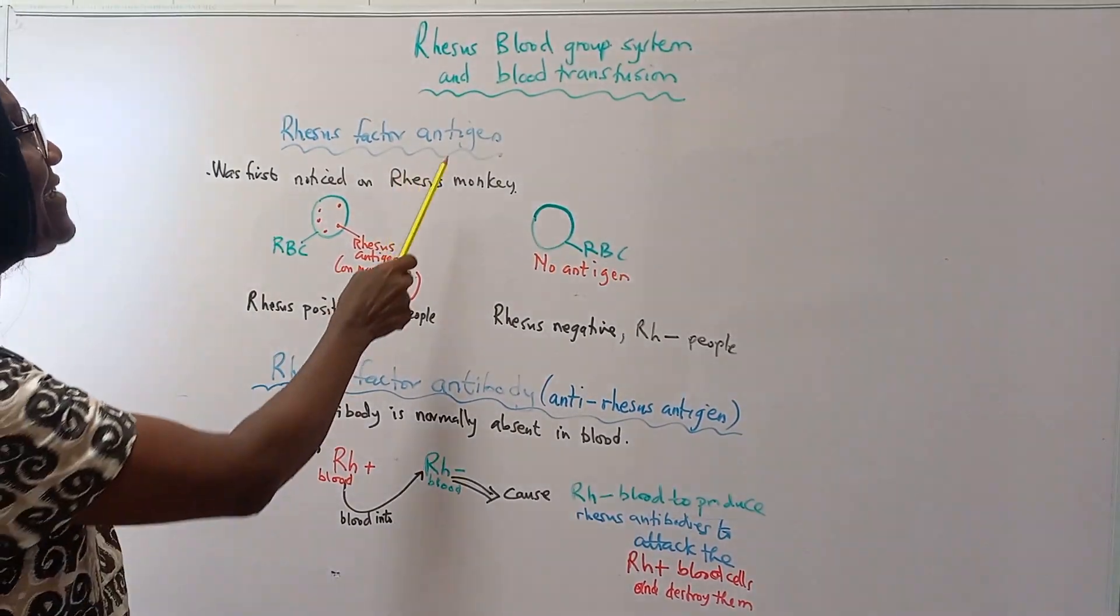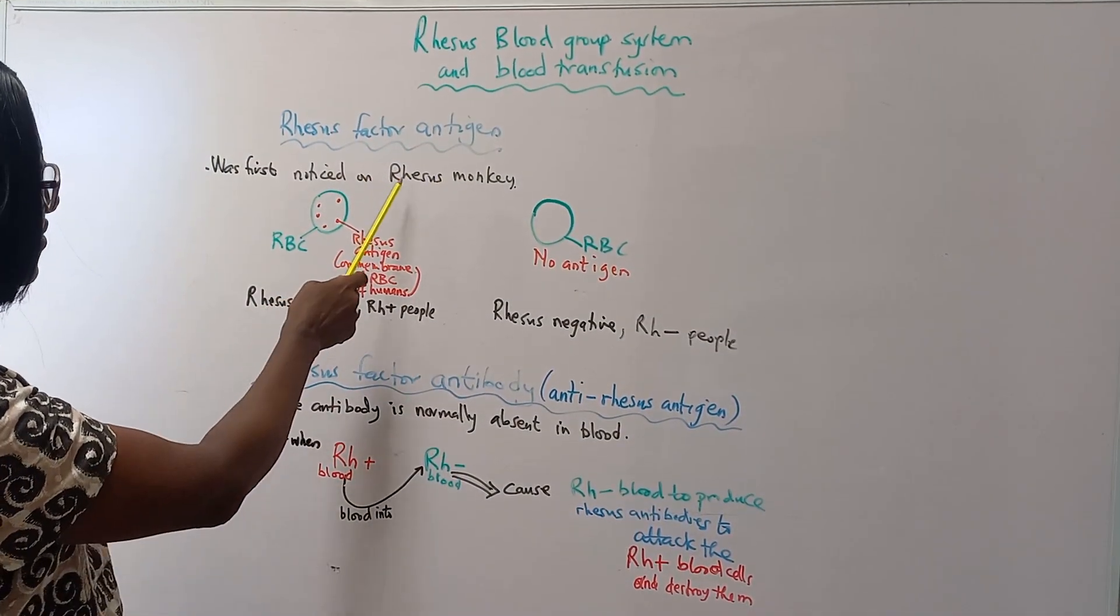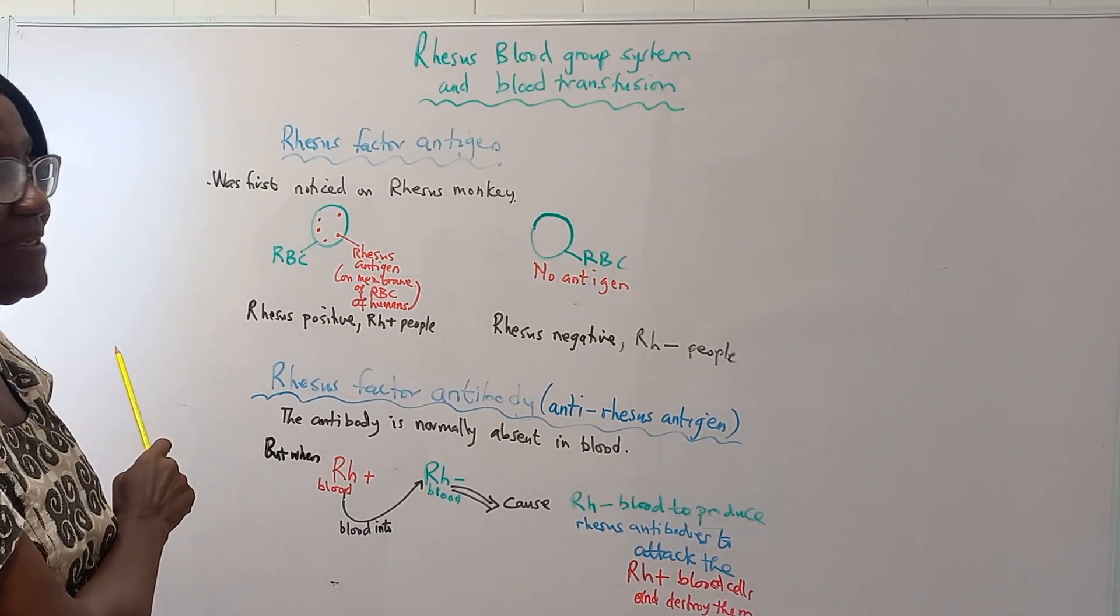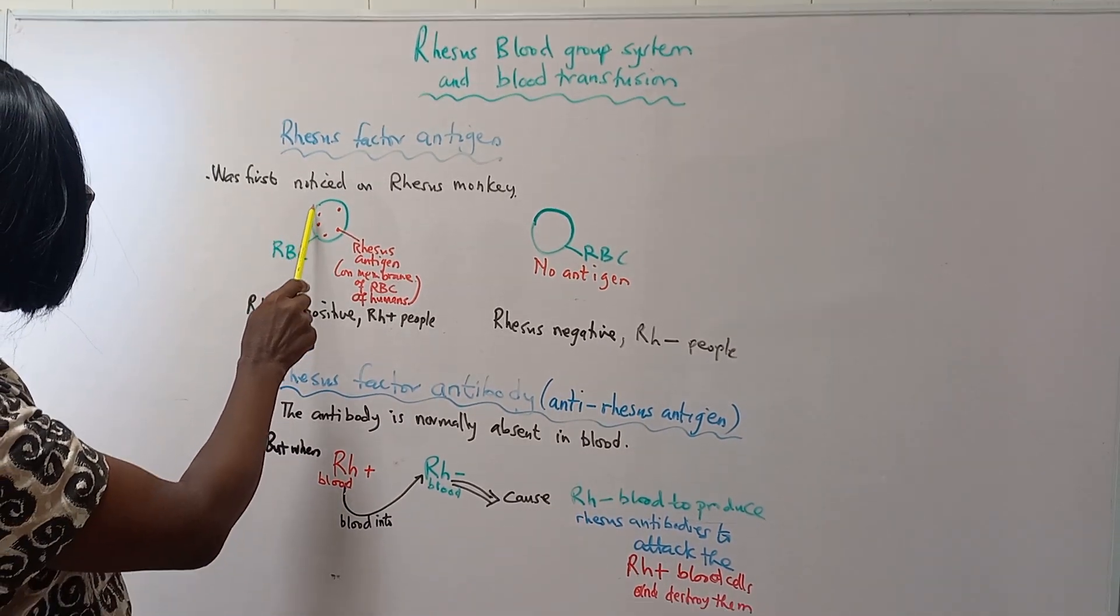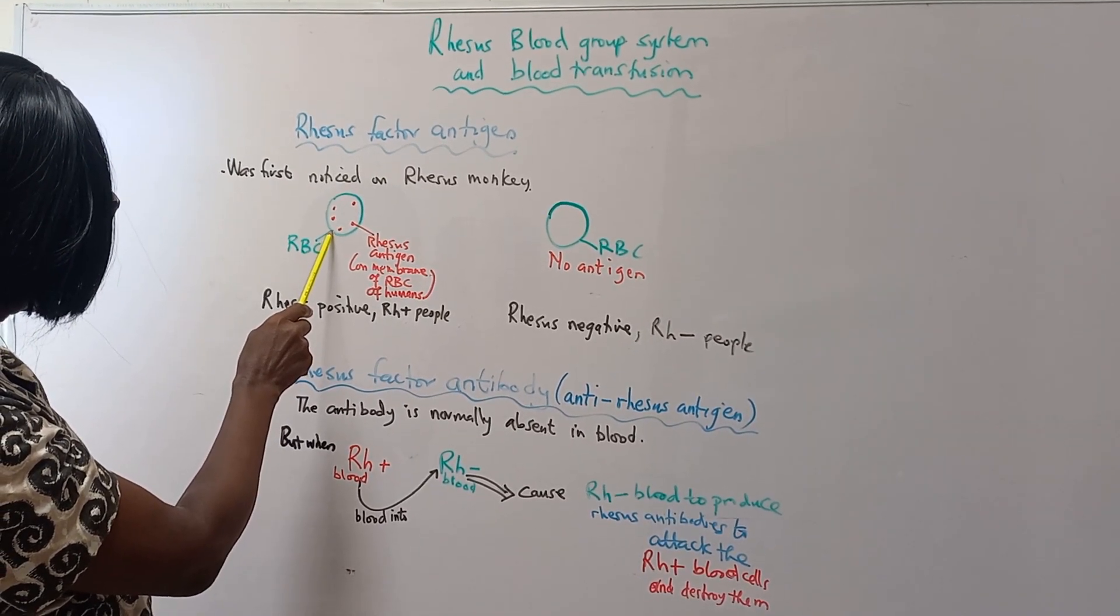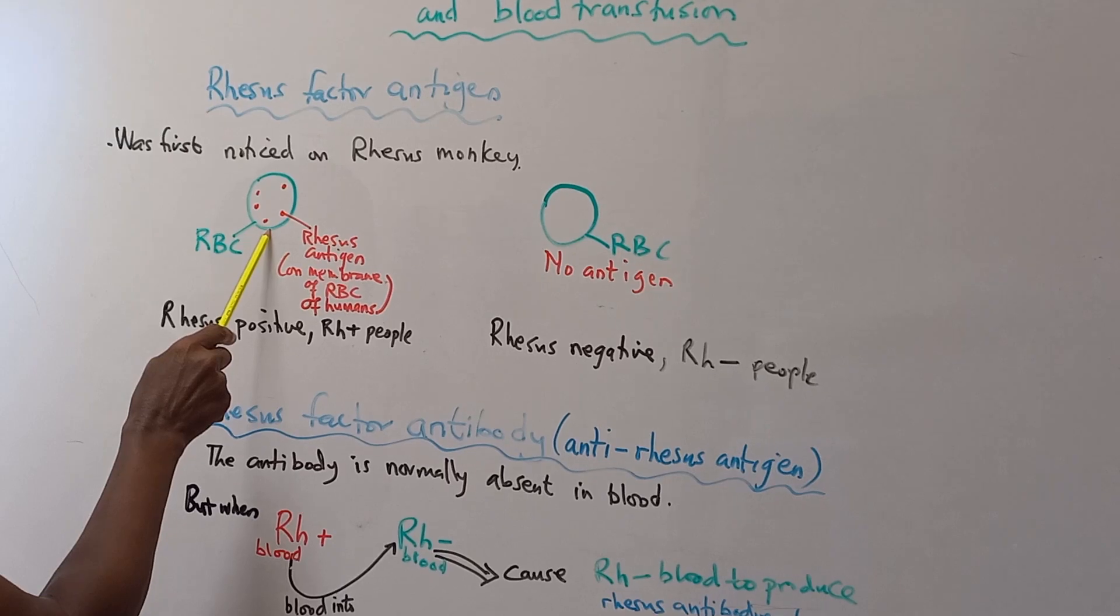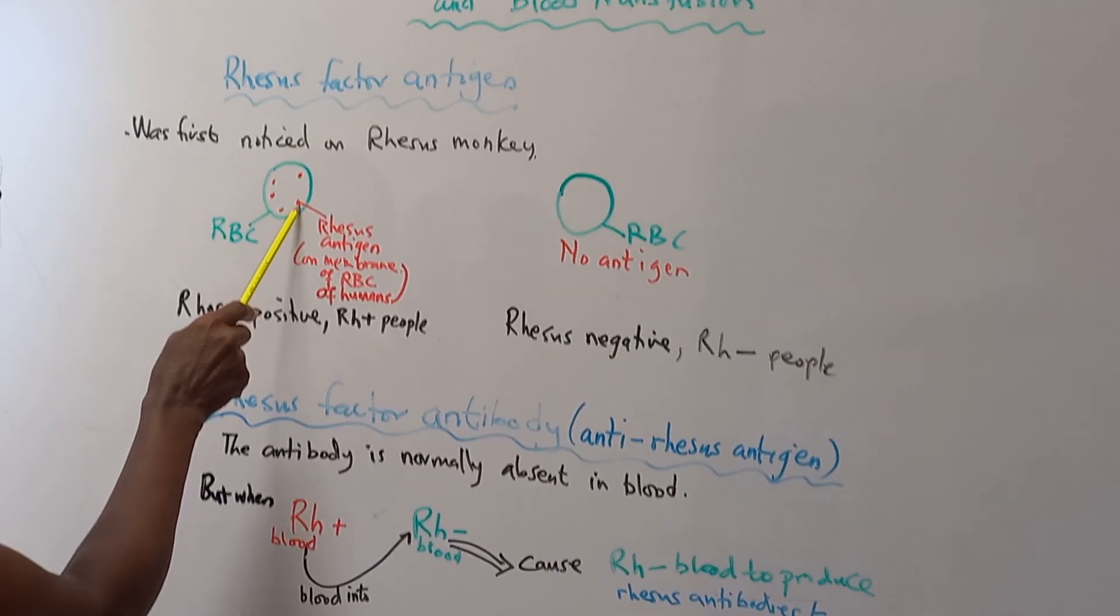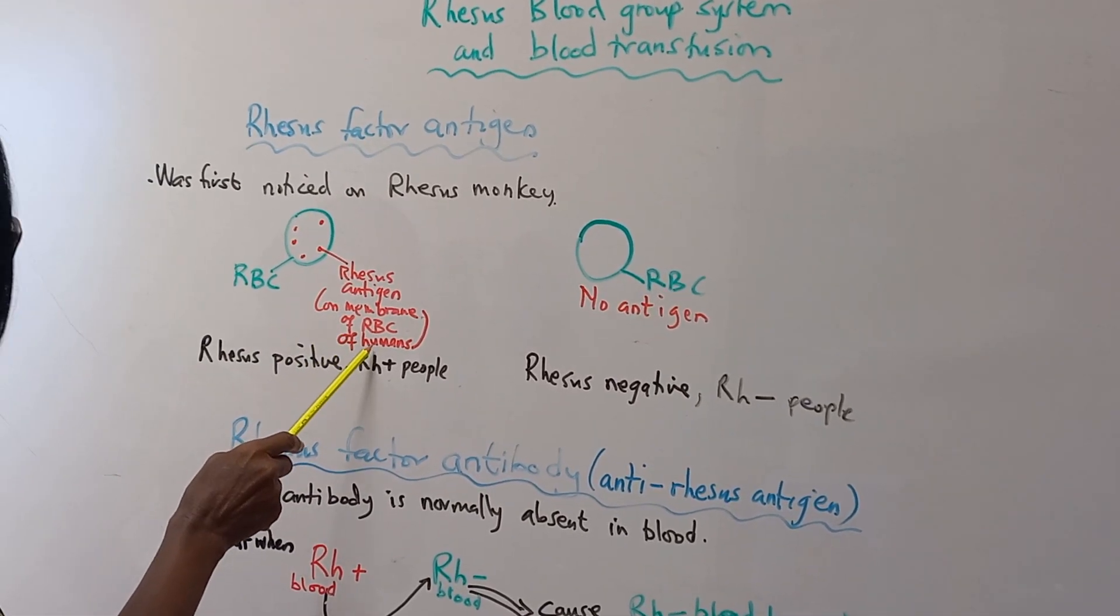There's a Rhesus antigen. This antigen was first noticed on the Rhesus monkey. The antigen, as we've always known antigens, they are on the membrane of the red blood cells. So the Rhesus antigen is on the red blood cell membrane of humans.